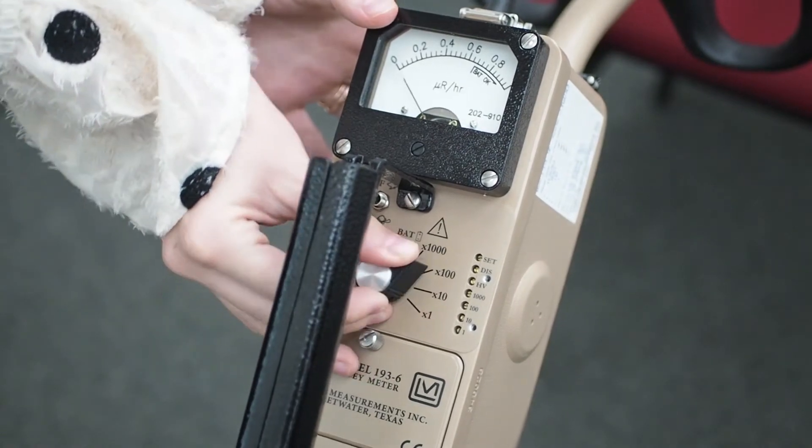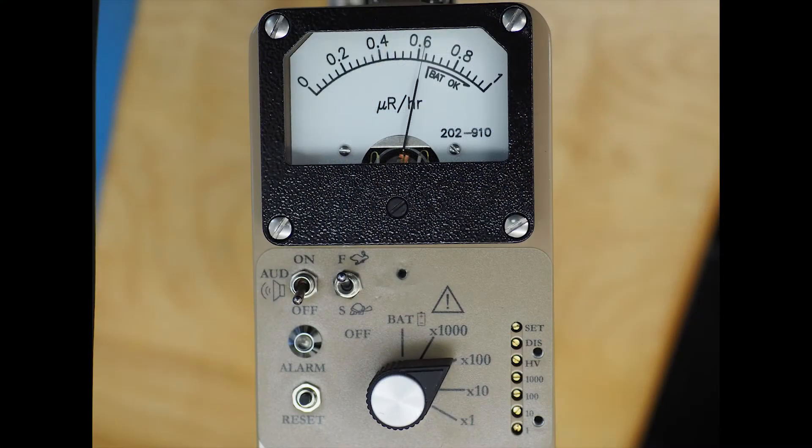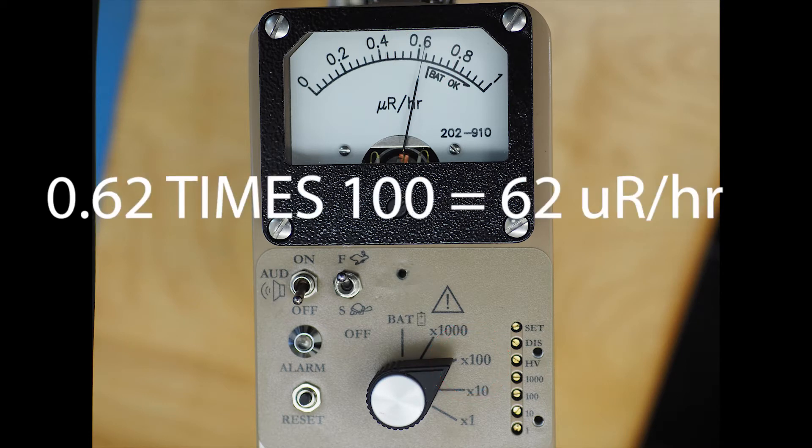Move the range selector switch to one of the range multipliers to make a measurement. To determine the actual reading, multiply the scale readings by the range multiplier. In this picture, the needle is on the 0.62 mark and the knob is on the x100 position. So the actual reading is 0.62 x100 or 62 µR per hour.